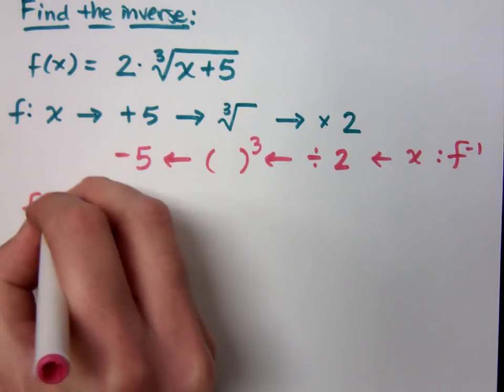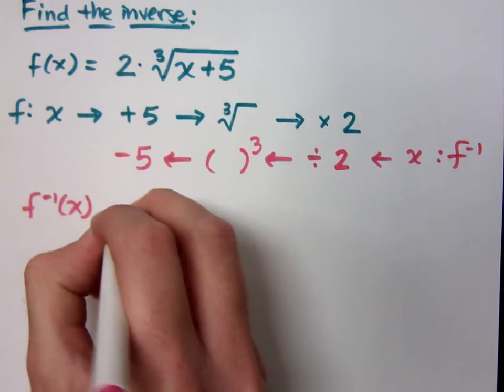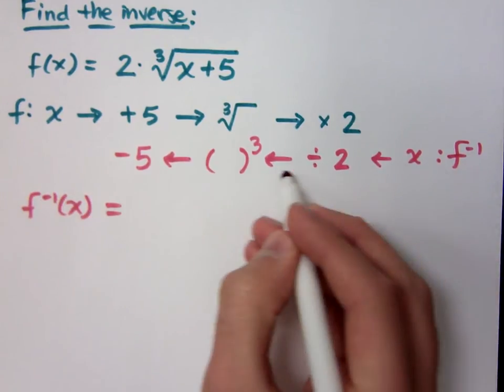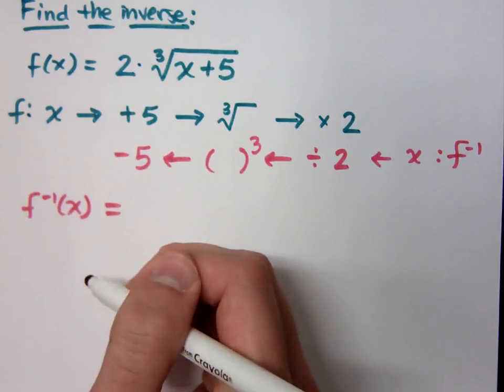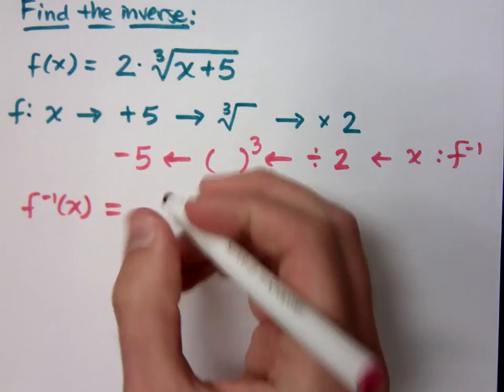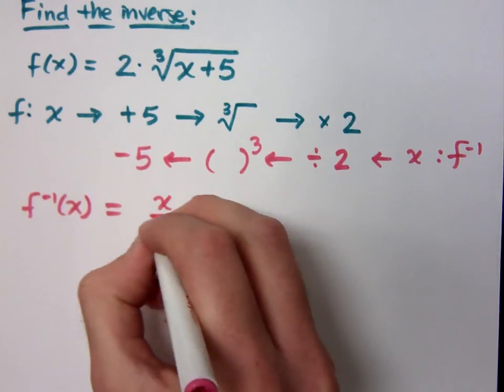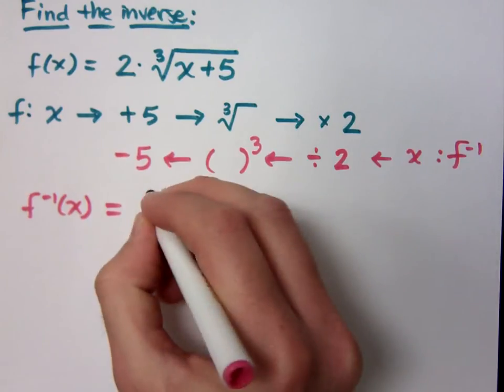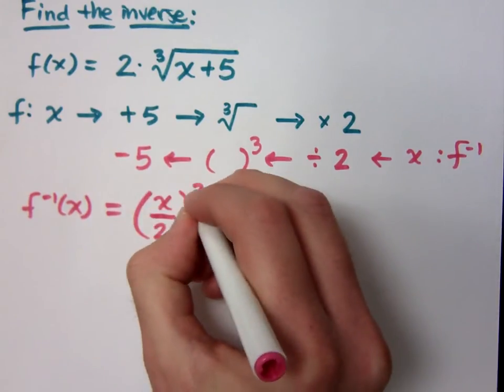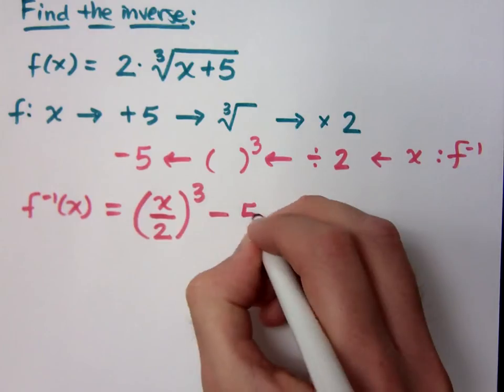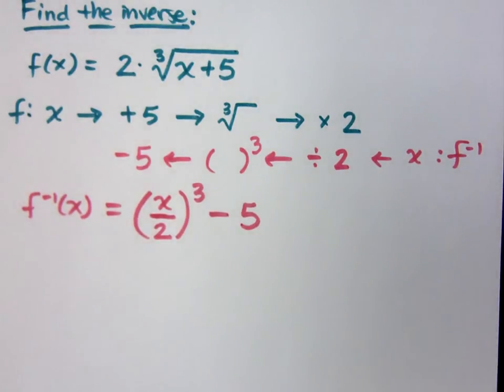So that means my inverse function, f inverse of x, is going to be written as what? How do you write all of this going backwards? x over 2 cubed minus 5. x divided by 2, the whole thing raised to the third power, and then minus 5.